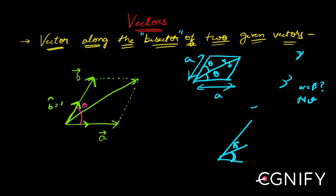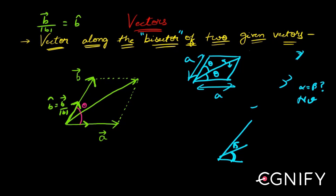When you take a vector and divide it by its magnitude, you get a unit vector along that direction. Similarly, the unit vector along ā is â, which is ā divided by |a|.